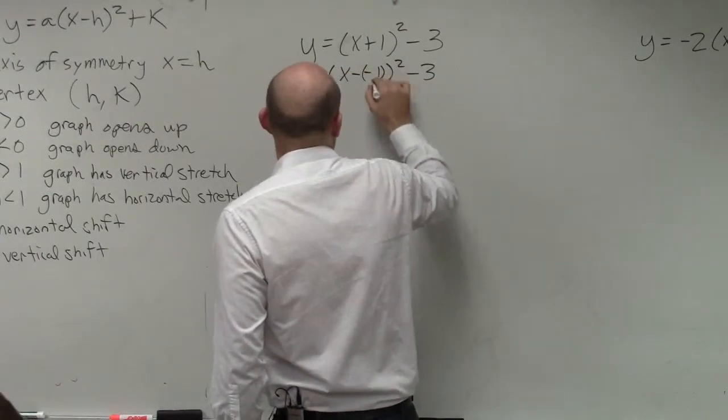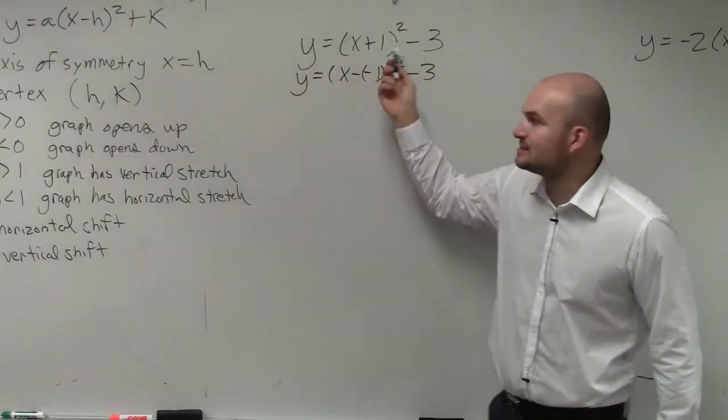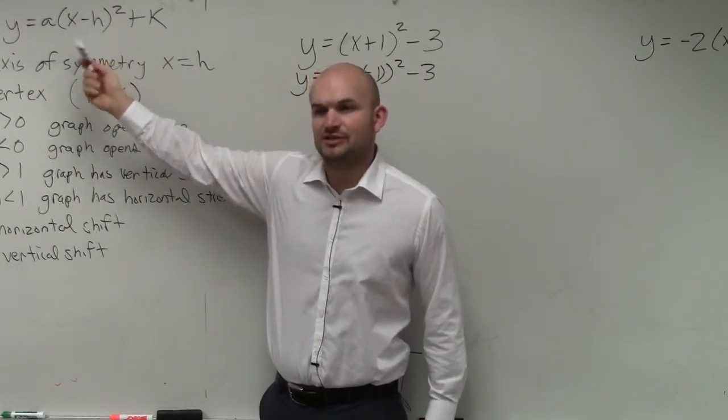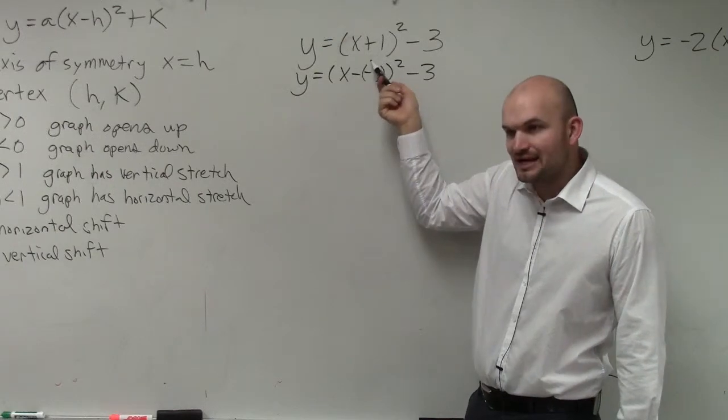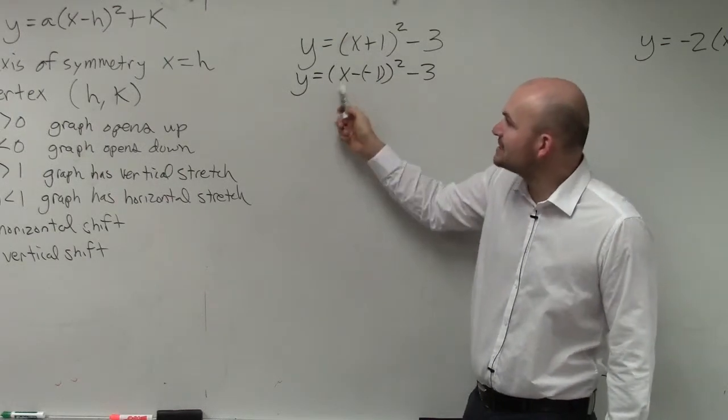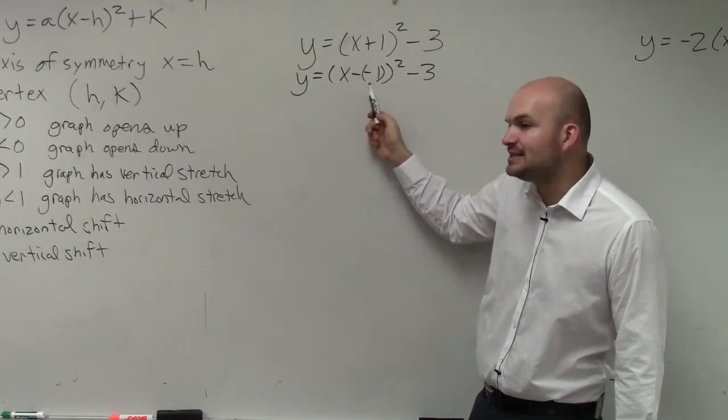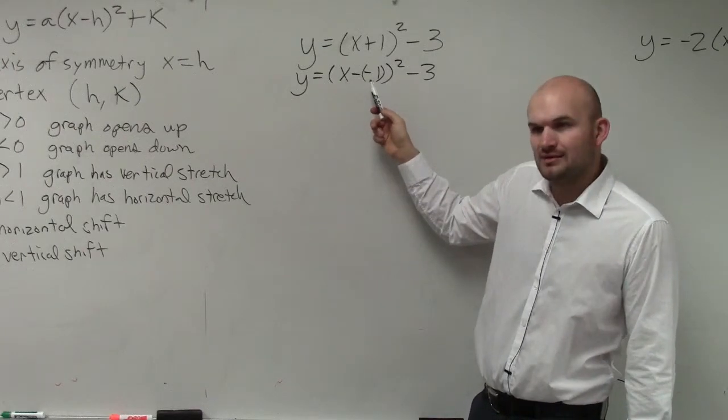So I want you guys to understand that when you're looking at this, think about this. This is x opposite of h. So whatever your h is in your equation, think about taking the opposite sign here. Because really, it's x opposite h. Well, what is h? h is negative 1. Does everybody see that?